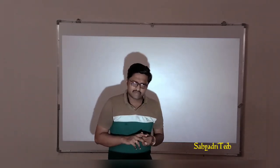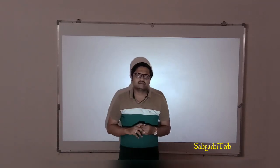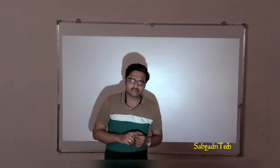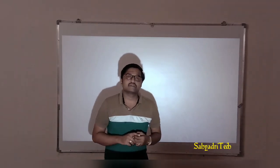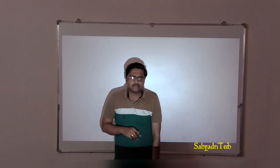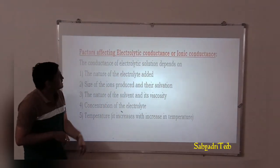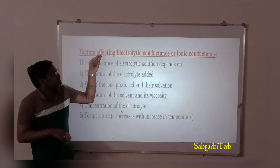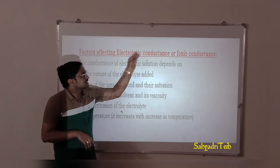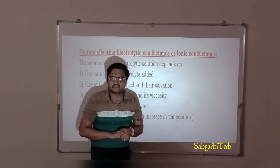Now, as we said, there are two types of conductors: metallic conductors and electrolyte conductors. When we think of the second type — electrolyte conductors — they are also named as ionic conductors. There are a few factors which influence ions and are going to affect electrolytic conductors.